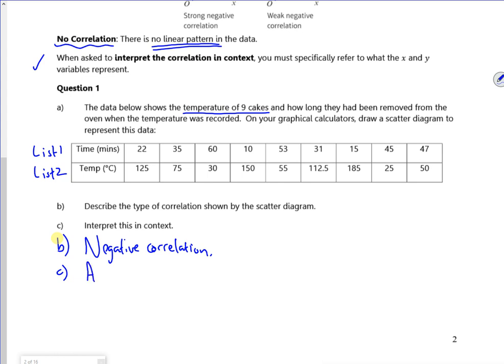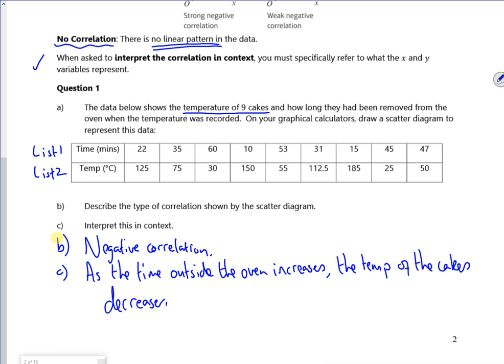So we can say, as the time outside the oven increases, the temperature of the cakes decreases. It's very factual. So that time's increasing, but the temperature is decreasing. Don't try and elaborate on it. Just kind of say it as it is.